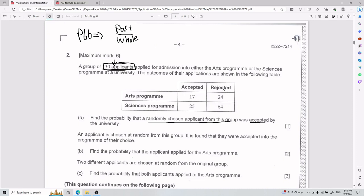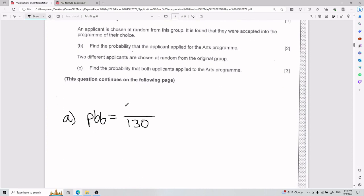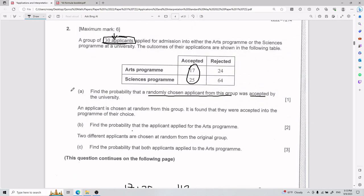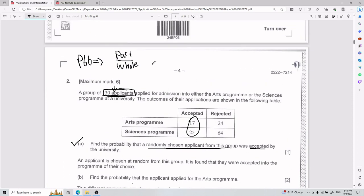Then they tell you that they were accepted. So which ones were accepted? These two, right? Because we're looking at the accepted column, the ones that were accepted were 17 and 25. So I can go ahead and put 17 plus 25 over here. And I end up with 42 over 130, which is roughly 32.30%. So that is for part A. Really keep in mind the whole part over whole thing.